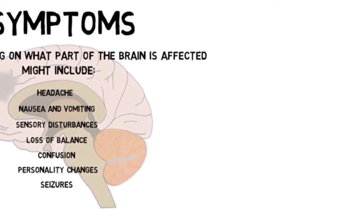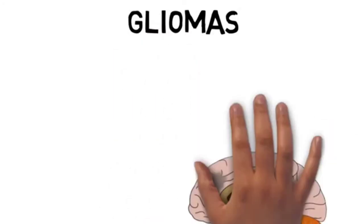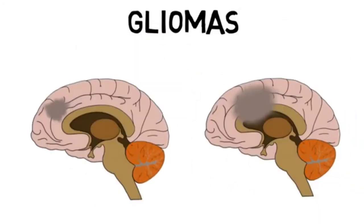There are over 120 different types of brain tumors, so I'll only discuss a few of the more common types here. Gliomas are a category of brain tumor that begins in the glial cells. The most common glioma is astrocytoma, which arises from glial cells called astrocytes.